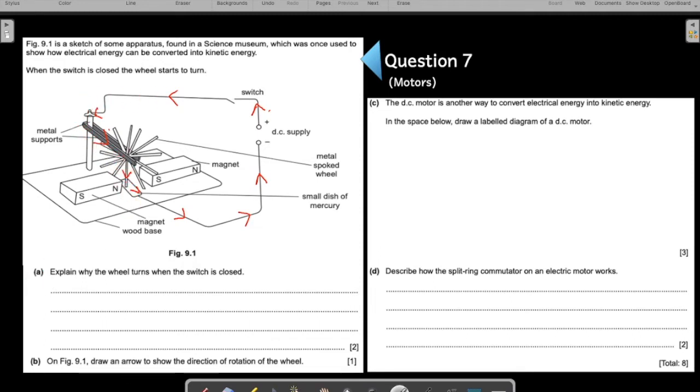So part A of the question: Explain why the wheel turns when the switch is closed. It's a two mark question. Always look at the marks. Give at least two valid points.